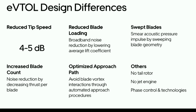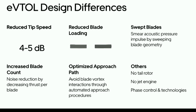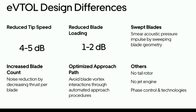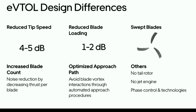We can increase the blade chord, increasing the solidity and reducing the blade loading — reducing the blade CL — which will allow us to reduce broadband noise by perhaps 1 to 2 dB. We can sweep the blades, smearing that acoustic impulse as it passes by the observer, and through that save perhaps 3 to 5 dB. We can increase the blade count, which shifts the blade passage frequency, reduces the thrust on each blade, weakens that acoustic impulse, and allows us to save another 3 to 5 dB.